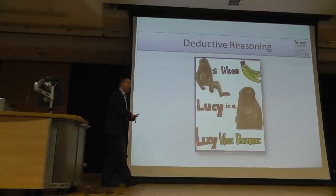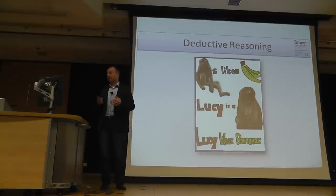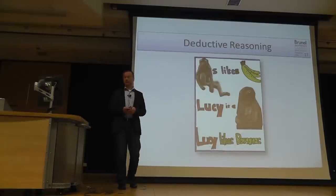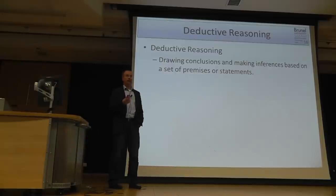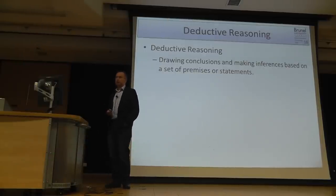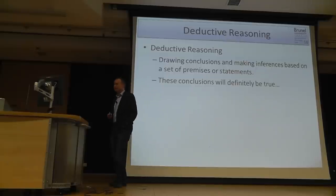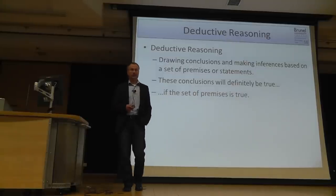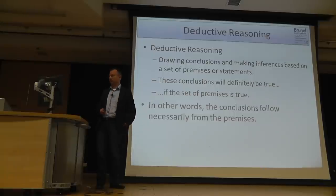Let's change to the second way of reasoning: deductive reasoning. That is where we apply this type of logical inference. We have a set of premises or statements, and from these we derive conclusions. Based on logic, these conclusions will definitely be true if the set of premises is true. There is a definite causal link between premises and conclusion.